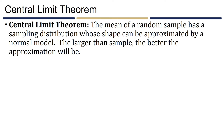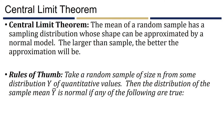What you've just seen is a demonstration of the central limit theorem. The central limit theorem states that the mean of a random sample has a sampling distribution that is approximately normal, and the larger the sample gets, the better this approximation will be. We have three different rules to determine if a sampling distribution can be approximated using a normal model.